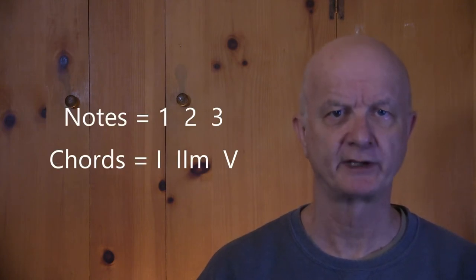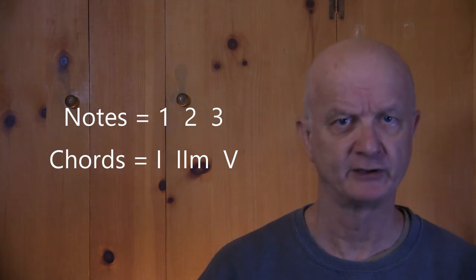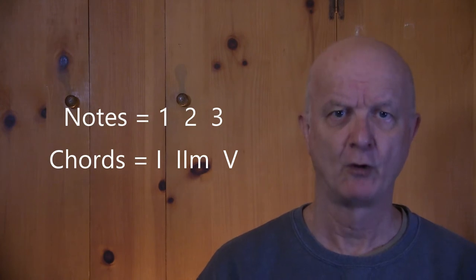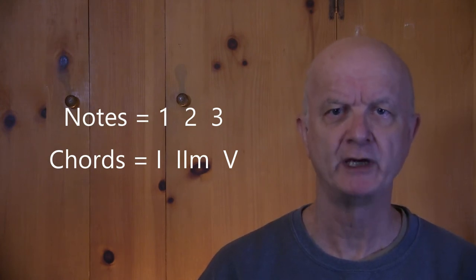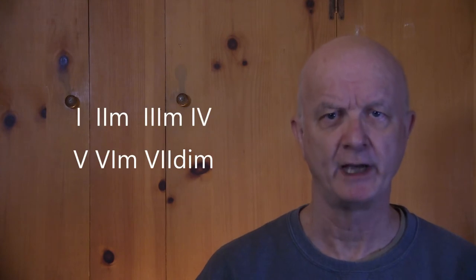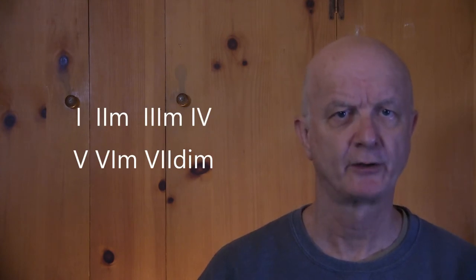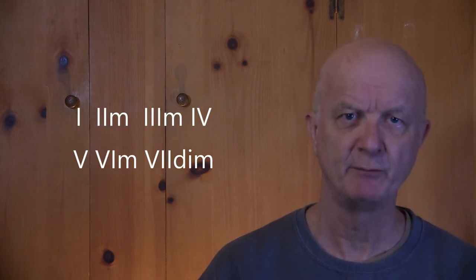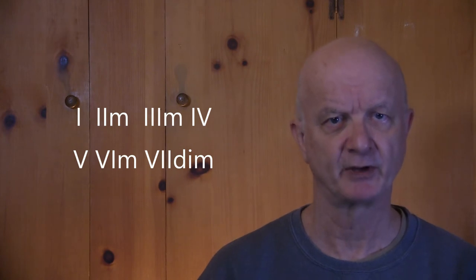In any of my instruction videos, when I talk about individual notes, I will use alphanumeric numbers, such as you see if you were looking at a clock. When I talk about chords, I will use Roman numerals. Look back at example 9 — we can number these chords in the following way: 1, 2 minor, 3 minor, 4, 5, 6 minor, 7 diminished. See this in example 11.